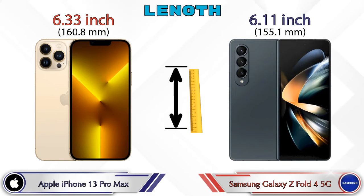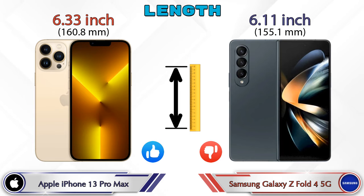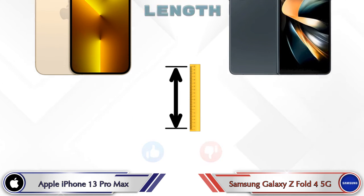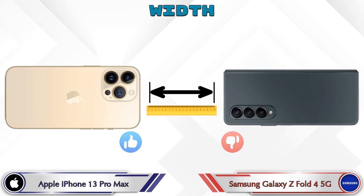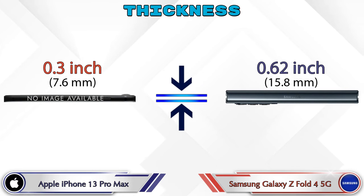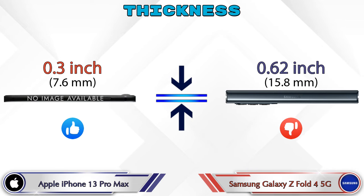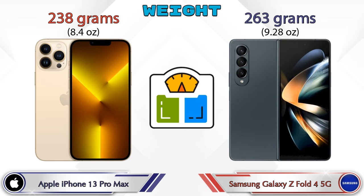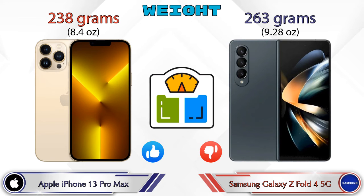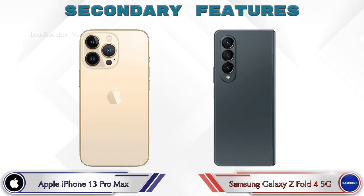Talking about dimensions: the iPhone 13 Pro Max has a length of 6.33 inches and the Z Fold 4 5G is 6.11 inches. Width is 3.07 inches for the iPhone and 2.64 inches for the Z Fold 4 5G. Thickness: the iPhone 13 Pro Max is 0.30 inches, while the Z Fold 4 5G is 0.62 inches — thicker than the iPhone. Weight: the iPhone 13 Pro Max is 238 grams and the Z Fold 4 5G is 263 grams, which is heavier.